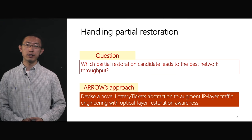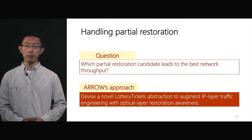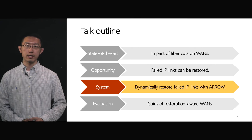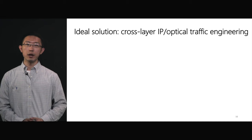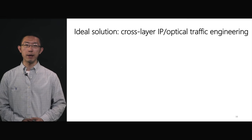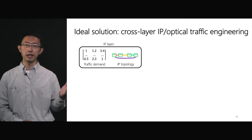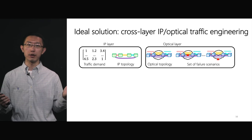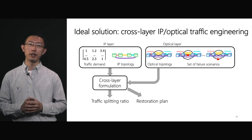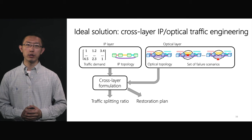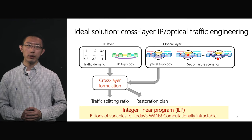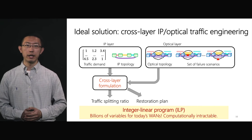In response, ARROW devises a lottery ticket abstraction to augment IP layer traffic engineering with optical layer restoration awareness. The ideal solution is to formulate the problem into a cross-layer IP optical traffic engineering formulation. This formulation jointly considers the traffic demands and network topology on the IP layer, and also takes the optical layer topology and fiber cut scenarios into account. Theoretically, this cross-layer formulation can find the optimal traffic splitting ratios on the IP layer and the optimal restoration candidate on the optical layer. However, the problem with this cross-layer formulation is that it is an integer problem and contains billions of variables for today's WAN topology, making it computationally intractable.